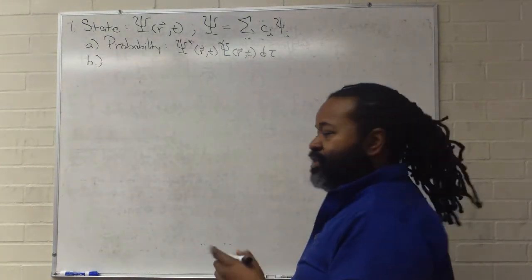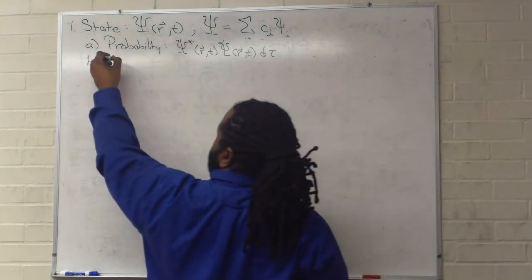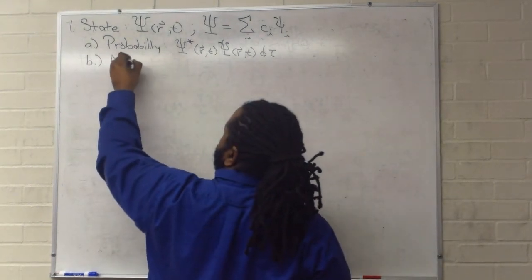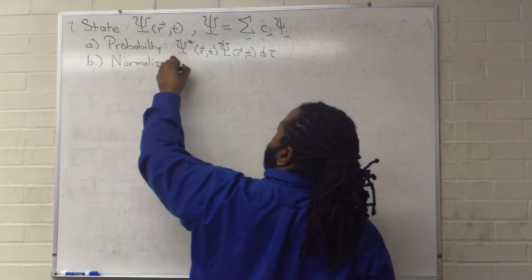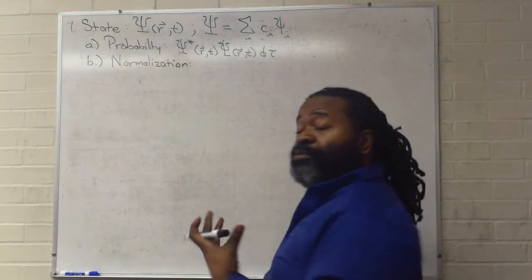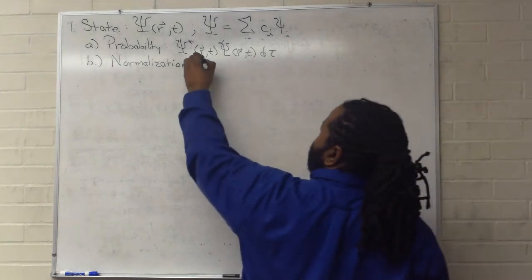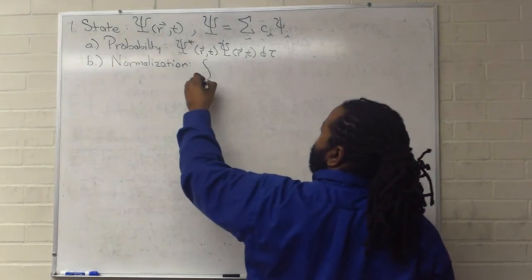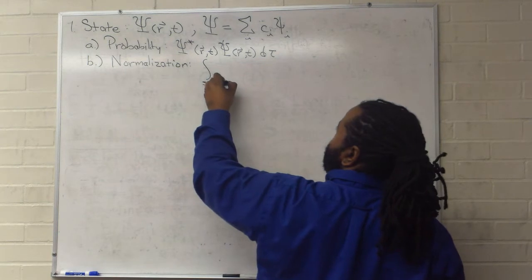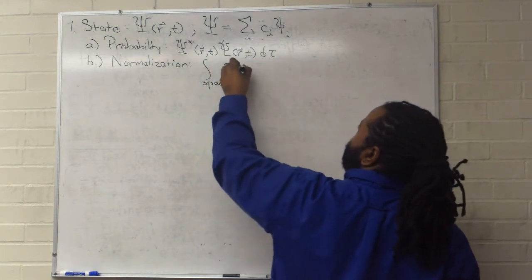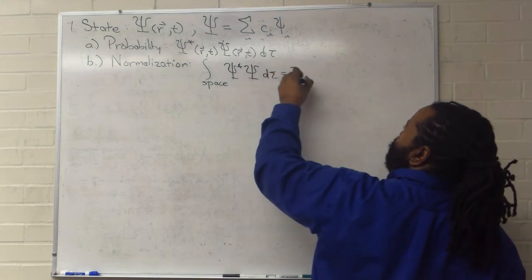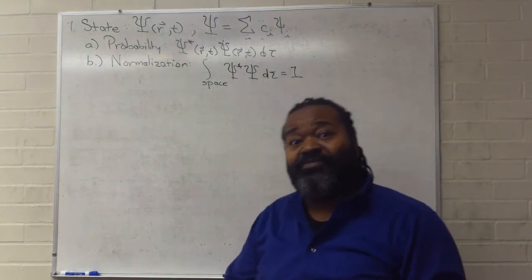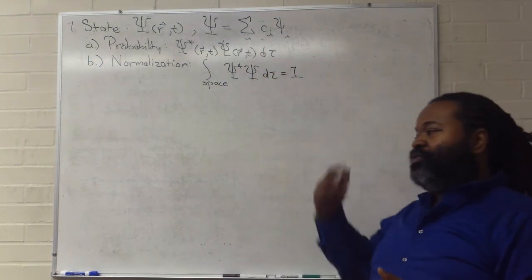The more interesting part is that we can normalize. This is important from the probability perspective because the odds of finding something in all space should be 1. It definitely exists if you look over all space.